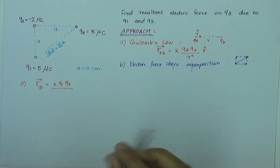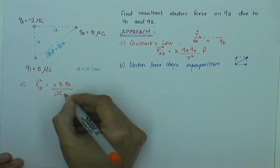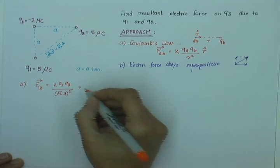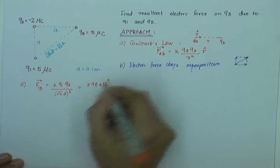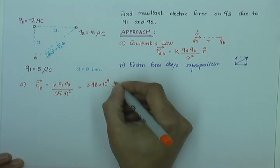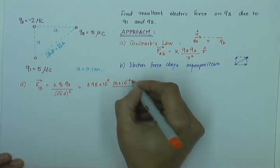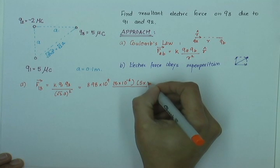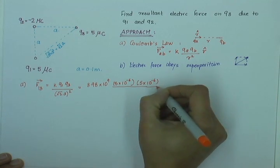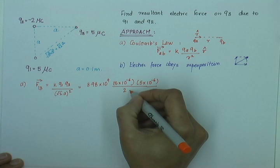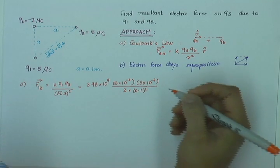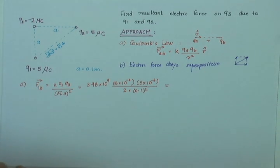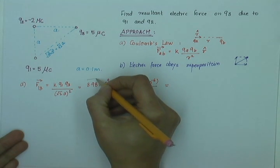And so, this is over square root 2 A squared. And that gives us 8.98 into 10 raised to 9, that's the Coulomb's constant, times 5 into 10 raised to minus 6 Coulombs, that is 5 microcoulombs, times 5 into 10 raised to minus 6 Coulombs over 2 into A is 0.1 squared.